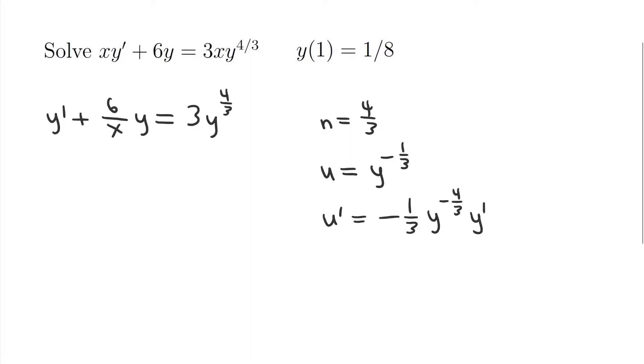And we can transform the original differential equation into an equation just in terms of u. The way I like to do this is first divide by y to the n. In this case, y to the 4 thirds on both sides of the equation. I get y to the negative 4 thirds y prime plus 6 over x. And when I divide y by y to the n or y to the 4 thirds, I get y to the 1 minus 4 thirds or negative 1 third. And then the right side just becomes 3.